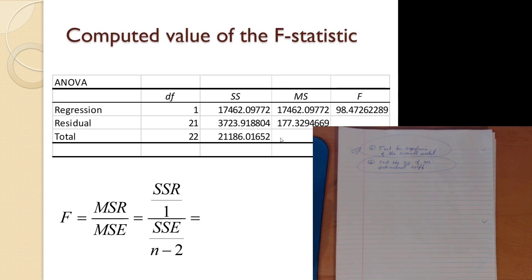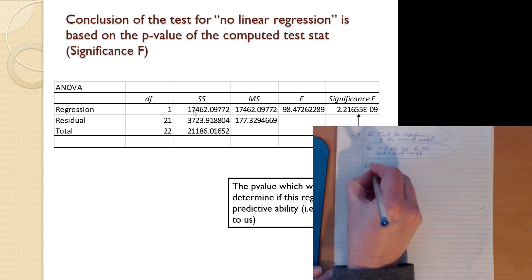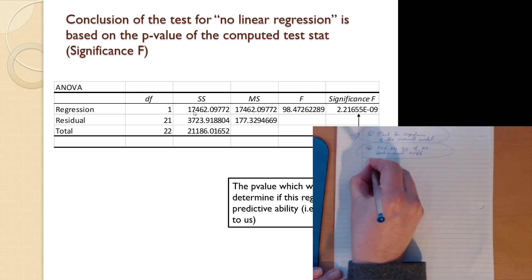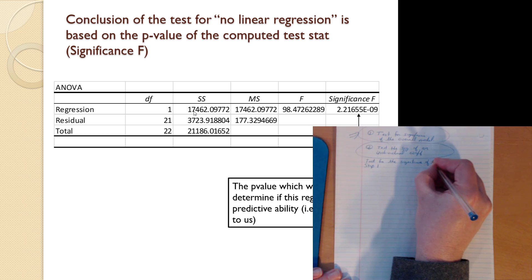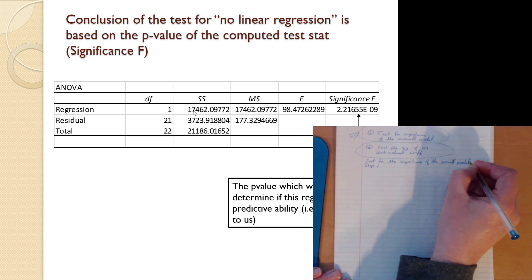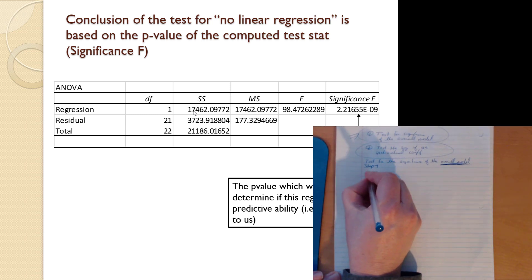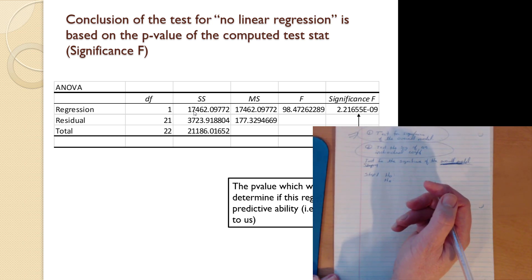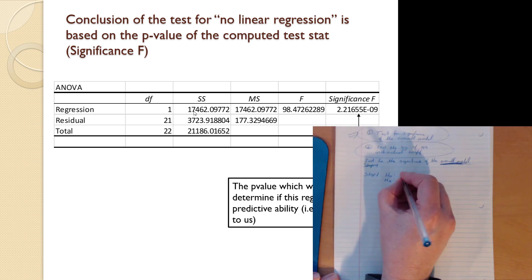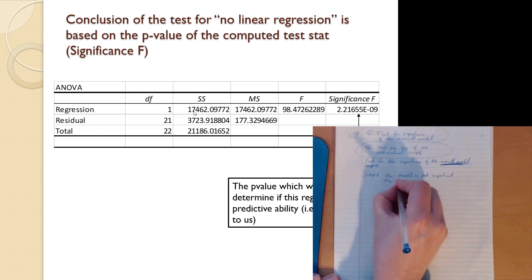Let's go back to our particular output. We're testing for the significance of the overall model — it's usually clear because you see the words 'overall model.' Step one: our HO and HA are going to be very general, no Greek letters. We will assume the model is not significant unless we can show otherwise. So HO is that the model is not significant — model is no good. That follows the standard scientific hypothesis: we assume something is not useful until you can prove that it does.